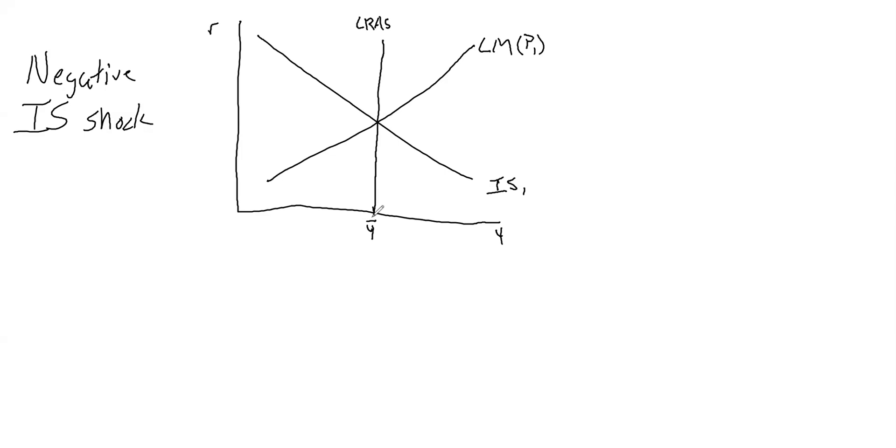And now if we take, for example, a negative IS shock, that's going to be a leftward shift in the IS curve. Let's say that something happens, perhaps the stock market goes down and people aren't able to spend as much money. And that shifts that entire IS curve to the left, from IS1 to IS2.